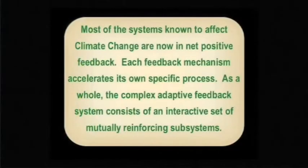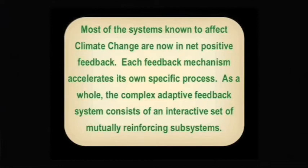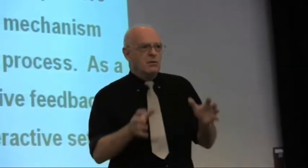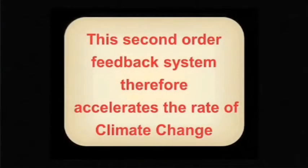Let's summarise. Most of the systems known to affect climate change are now in net positive feedback. Each feedback mechanism accelerates its own specific process. But as a whole, this complex adaptive feedback system consists of an interactive set of mutually reinforcing subsystems. The output from one feedback changes the temperature a bit faster, and that feeds into all the other feedbacks so they reinforce each other. That's an unstable system — it can move very quickly. It's what we call a second-order feedback system.